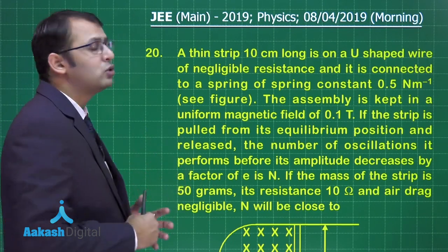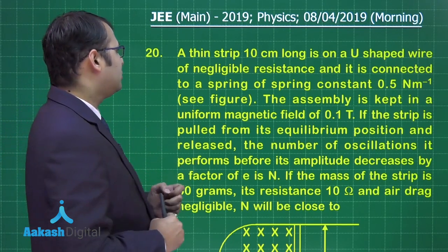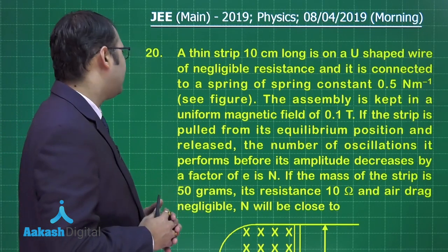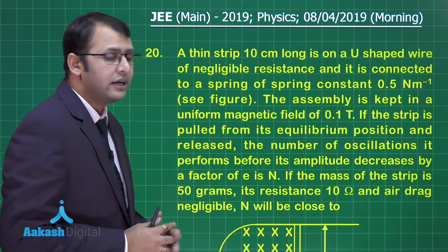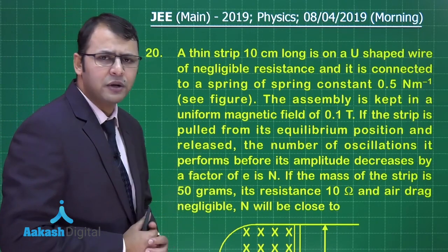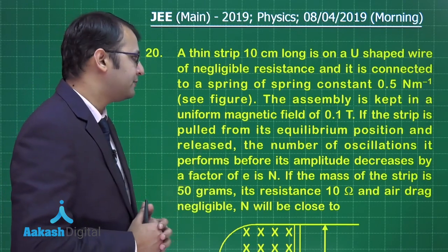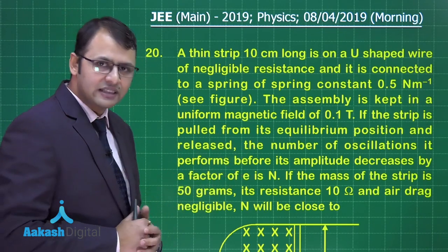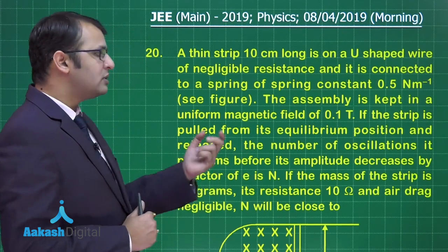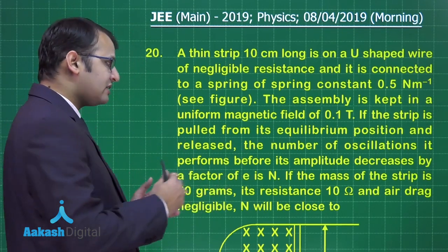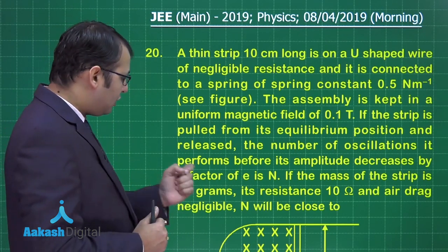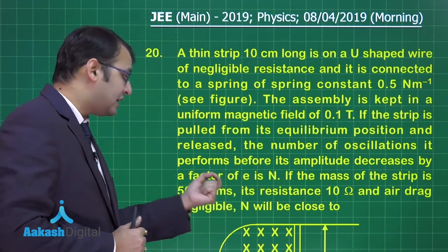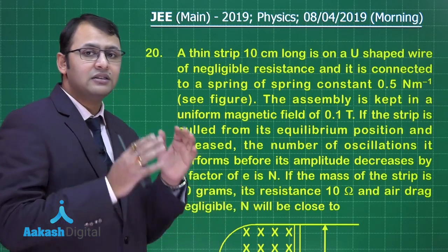Now let's move to question 20, which belongs to electromagnetism. A thin strip 10 cm long is on a U-shaped frame of negligible resistance, connected to a spring of spring constant 0.5 N/m. The assembly is kept in a uniform magnetic field of 0.1 tesla. The strip is pulled from equilibrium and released, and we need to find the number of oscillations n before its amplitude decreases by a factor of e.